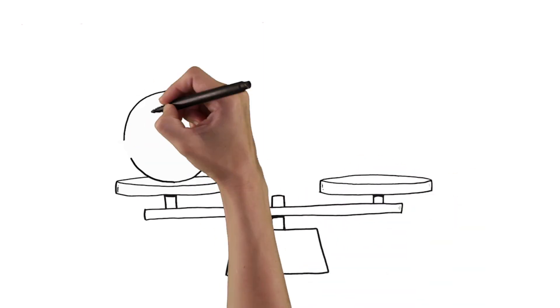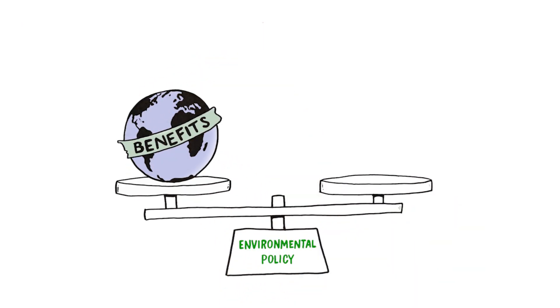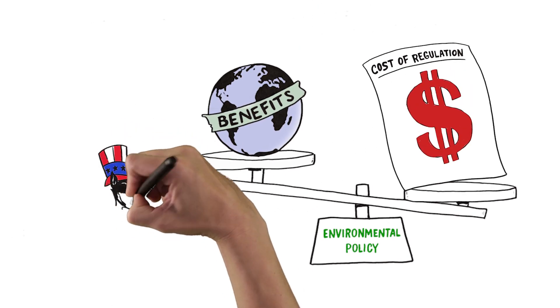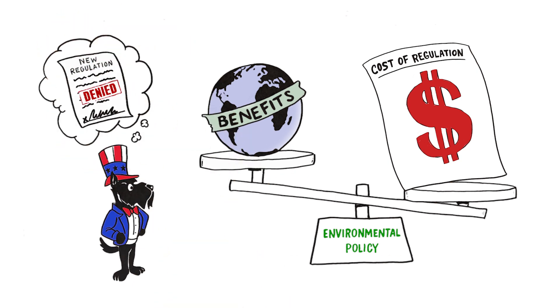And that means that the balance between benefits and costs, an important factor shaping environmental policy, may be biased in favor of costs. And that means that policymakers may be more conservative than they should be when determining how strict regulation should be.